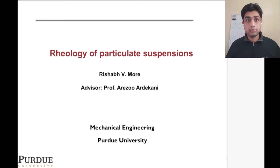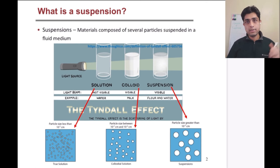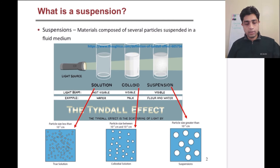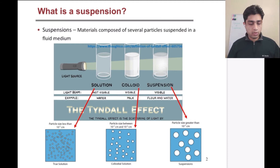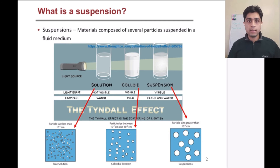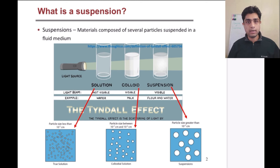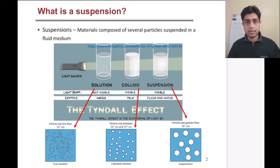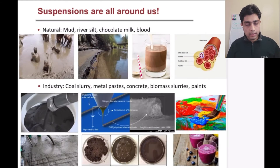To start with, what is a suspension? A suspension is basically a material formed when we have a bunch of particles suspended in a fluid. Depending on the size of these particles, they can be considered colloids or suspensions. Colloids are basically nanometer-size particles, and suspensions are usually particles with sizes greater than one micrometer. A very cool technique to know whether a material is a suspension or not is the Tyndall effect, where you shine a ray of light through the material. If it passes through, it is a true homogeneous solution; if it cannot pass, it is getting blocked due to the presence of particles, and in that case it can be a colloid or a suspension.